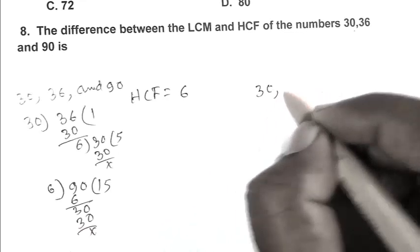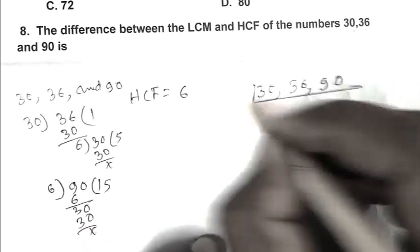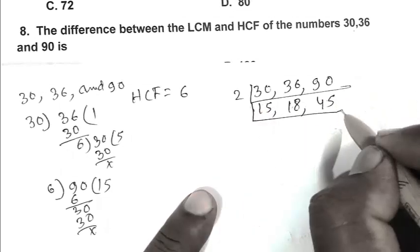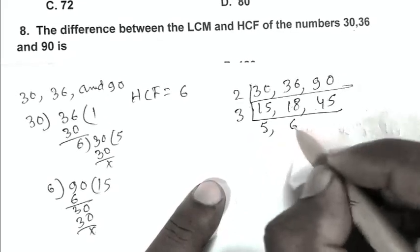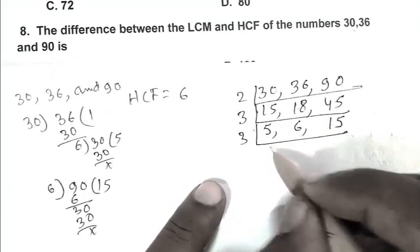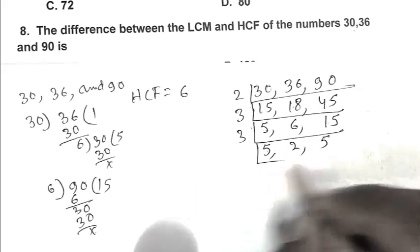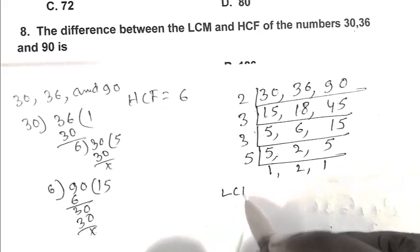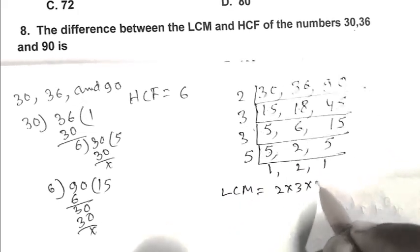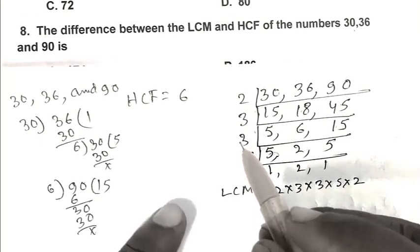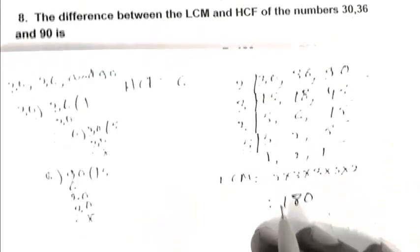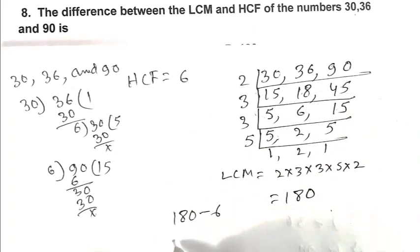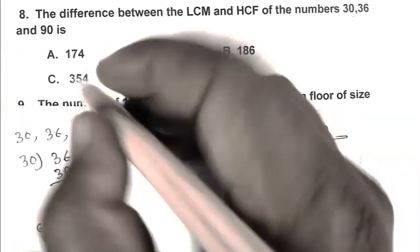Now calculating LCM. Dividing 30, 36, and 90: 2 times gives 15, 18, 45. Then 3 times gives 5, 6, 15. Continue: 3 gives 5, 2, 5. Then 5 gives 1, 2, 1. Finally 2 gives 1, 1, 1. LCM is 2 × 3 × 3 × 3 × 5 × 2 equals 180. The difference between LCM and HCF is 180 minus 6, that is 174. So A is the right answer.